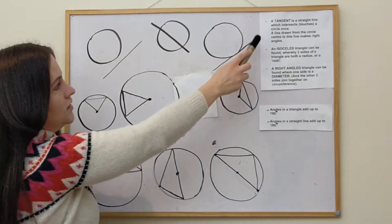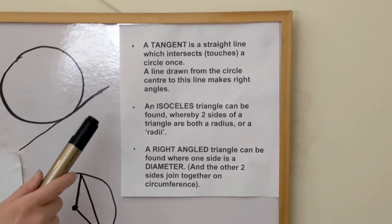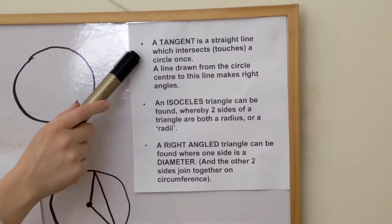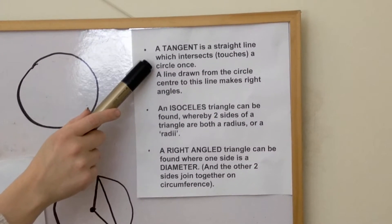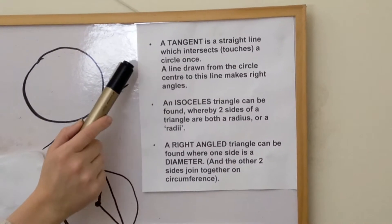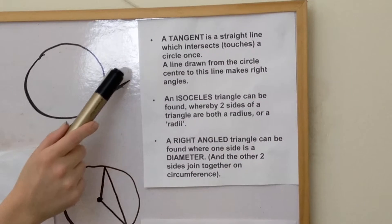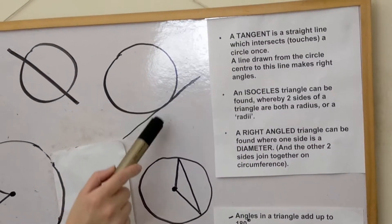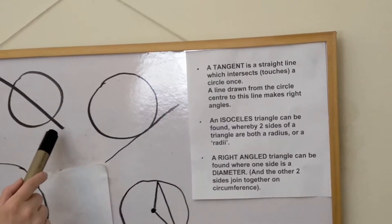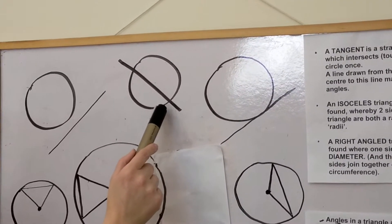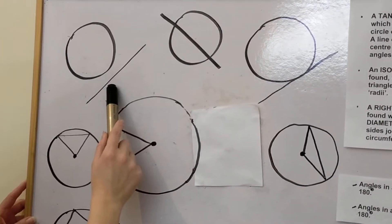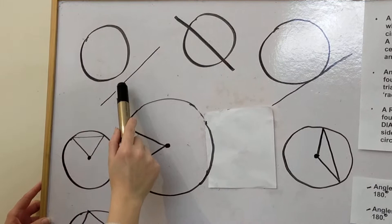The first point: a tangent is a straight line which intersects — i.e. touches — a circle once. Looking at the diagram, this line here is a tangent because it just touches the circle once. This one isn't a tangent because it touches the circle twice, and this one isn't a tangent because it doesn't touch the circle at all.